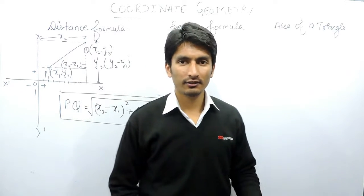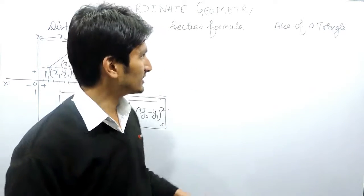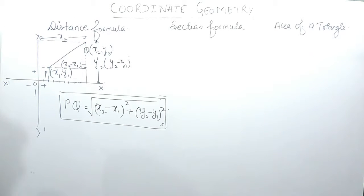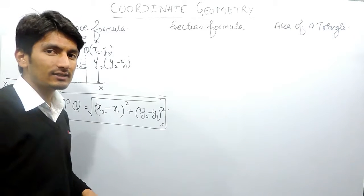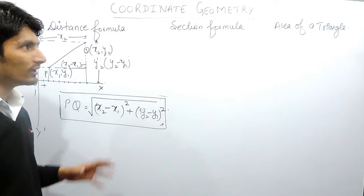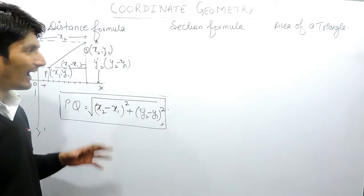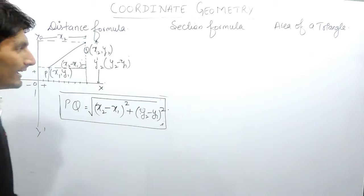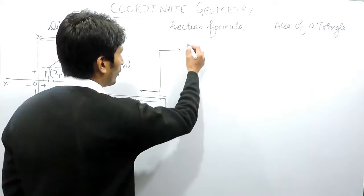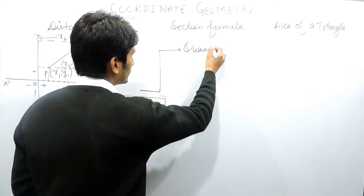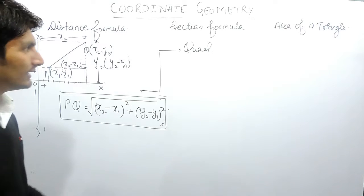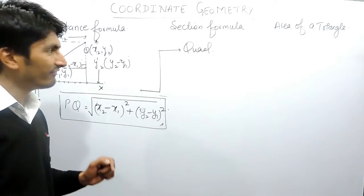Hello everyone, we are from True Math. In this video we will continue with the distance formula. In the previous video we already discussed how the distance formula can be used in proving collinearity and proving triangles. In this case we are going to prove for quadrilaterals. Quadrilaterals are basically a closed figure having four sides.